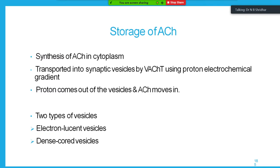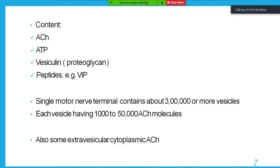Protons come out of the vesicles and acetylcholine moves in via an energy-dependent concentration gradient. There are two types of vesicles: electron-lucent vesicles and dense-core vesicles. The contents of these vesicles are acetylcholine, co-transmitter ATP, vesiculin (proteoglycan), and peptides — especially VIP (vasoactive intestinal polypeptide). During exocytosis, all these are released. Along with acetylcholine, co-transmitters are also released and act on the post-synaptic receptors.